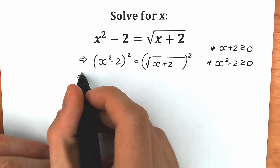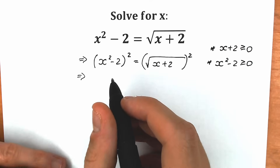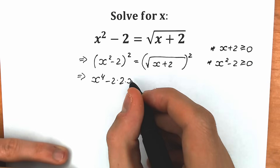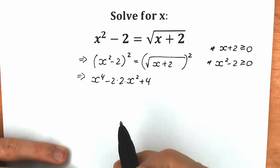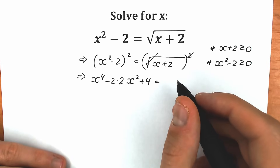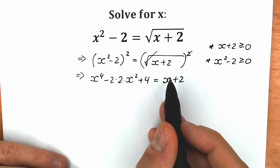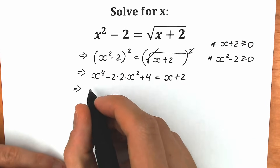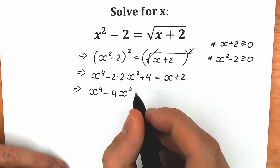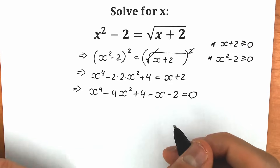Let's square both sides now. Using the basic school identity for (a − b)², we square the left side to get x to the fourth power minus 4x squared plus 4. On the right side, the square root squared with the second power cancels, leaving us with x plus 2. Now let's bring all elements to the left side, preferring zero on the right. We get x to the fourth power minus 4x squared plus 4 minus x minus 2 equal to 0.